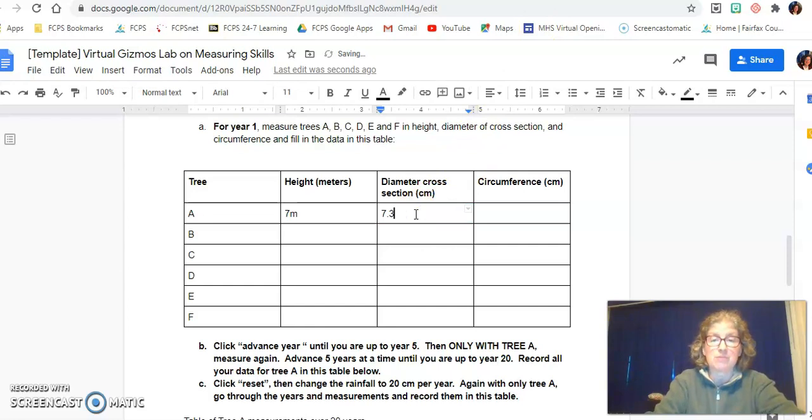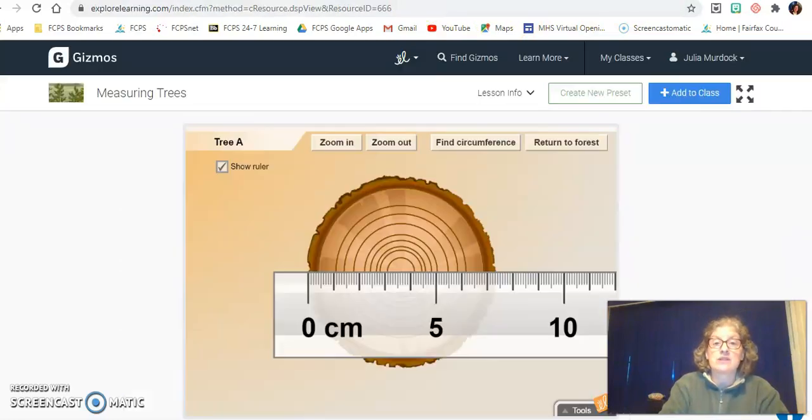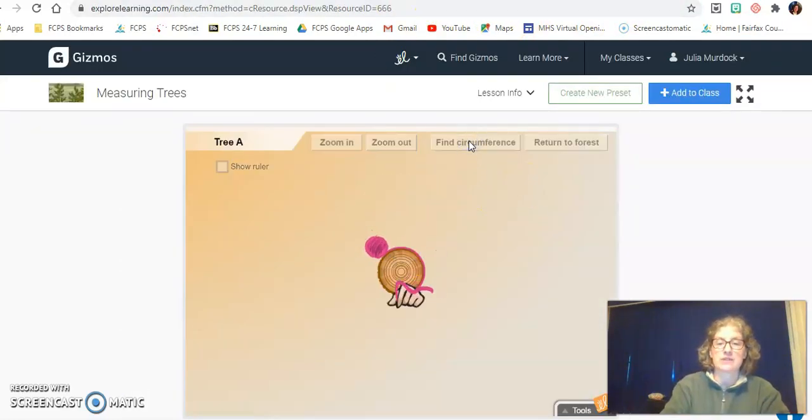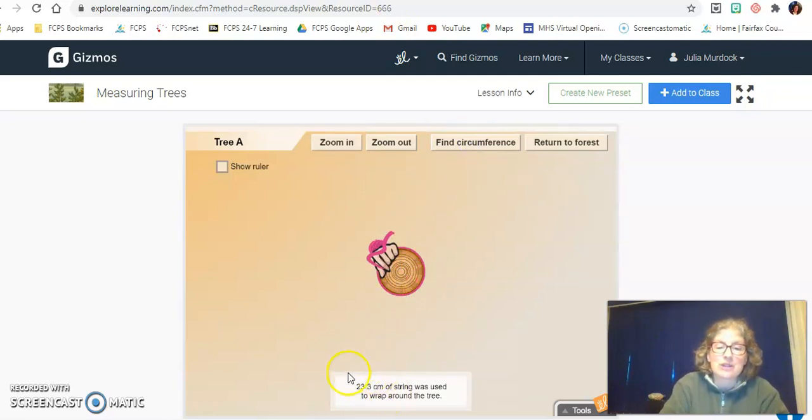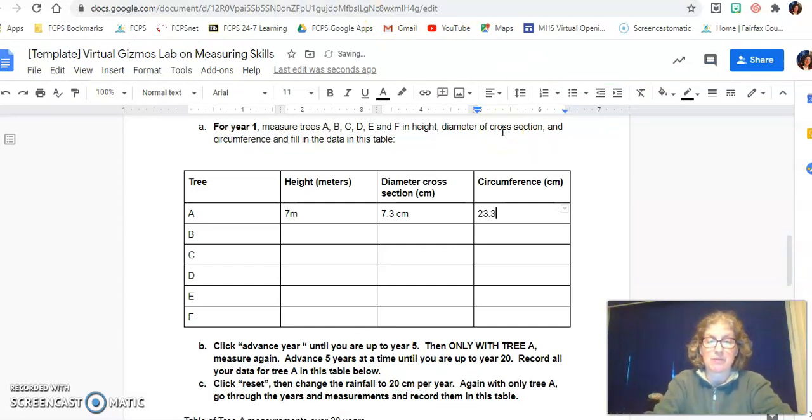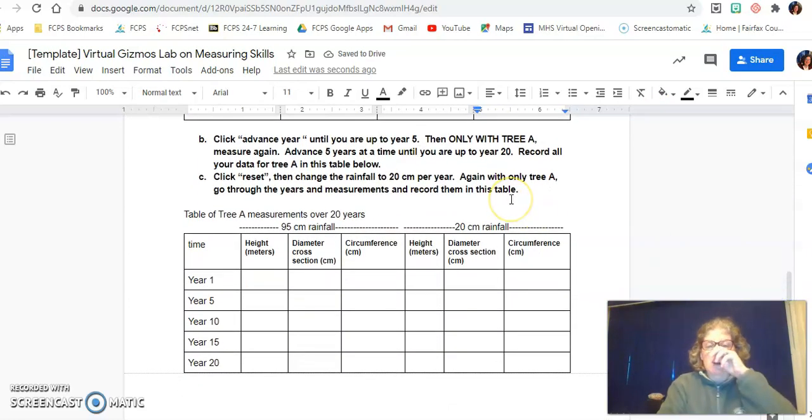Then the circumference is really easy, watch this. Line circumference, it does it for you. There it is, 23.3. So that's what I'm going to put in my template, 23.3 centimeters. That's what you do. Now for the rest of this you have to get some data over 20 years based on 95 centimeter rainfall just for tree A and 20 centimeter rainfall just for tree A. So I'm running out of time, I'm not going to be able to do all of that.